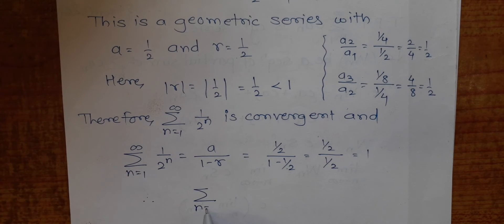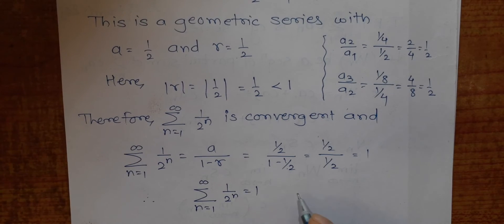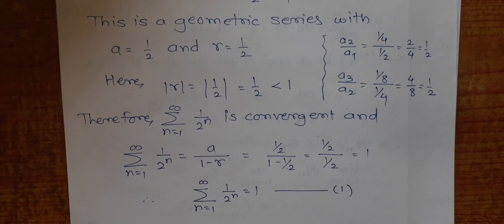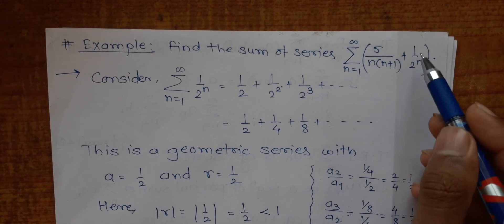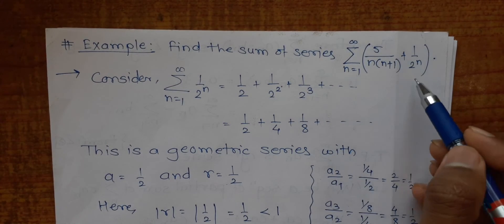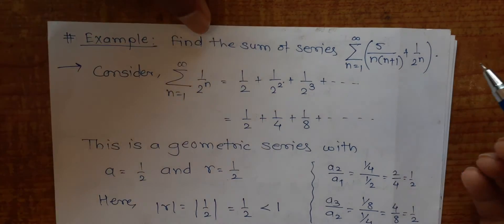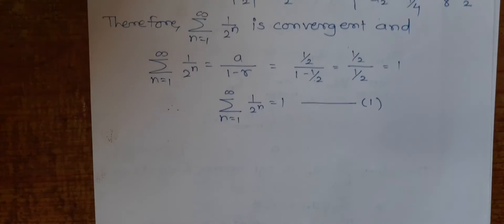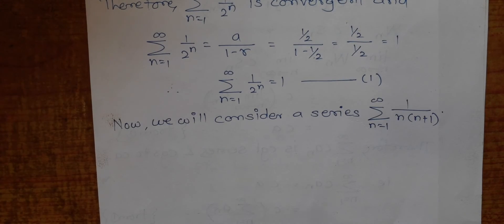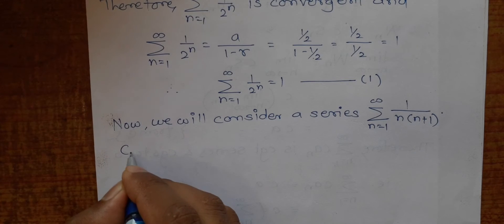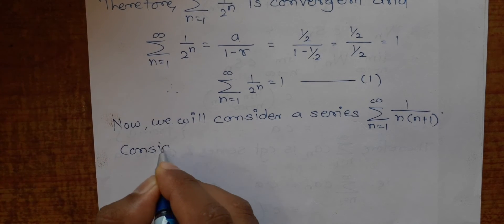Therefore, ∑(n=1 to ∞) 1/2^n = 1. I will call this equation number 1. So we have calculated the value of this first term. Now let us focus on the second part.